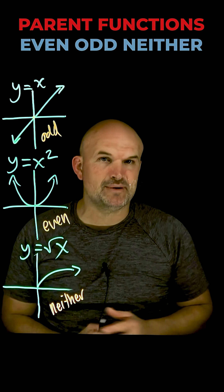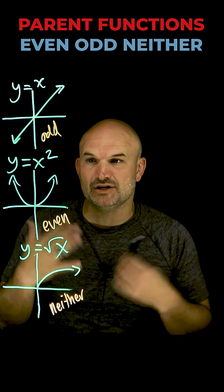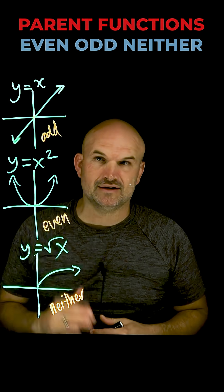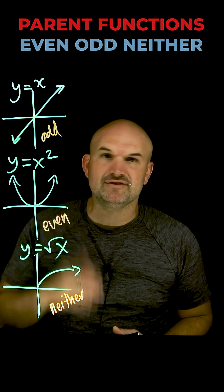However, these are not all of the parent graphs, and it's important to understand when you're dealing with a parent graph, what type of function is it? Is it even, odd, or neither? So here are some other examples of those types of functions.